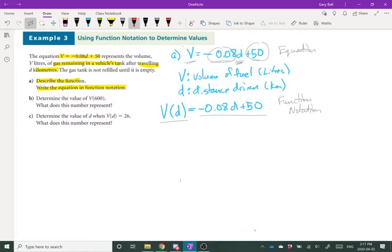Let's move on to part B. It wants to know what is V of 600. So essentially what it's asking, if the car has driven 600 kilometers, what volume of gas is left in that tank? So I'm going to write it out using this function notation right here.